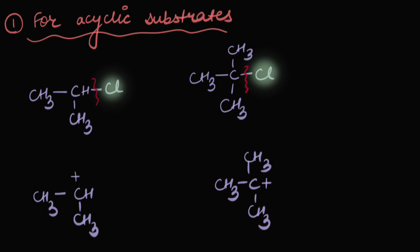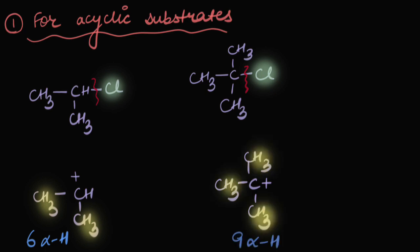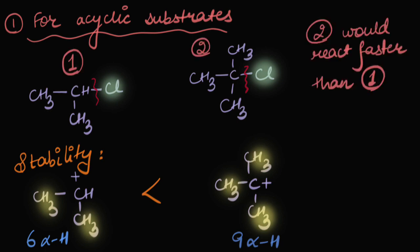Let's compare the stability of these carbocations. In the first case I can see there are six alpha hydrogens, while in the second case there are nine alpha hydrogens. More the number of alpha hydrogens, more is the hyperconjugation, and more is the stability. So the second carbocation is more stable than the first one, and therefore the second substrate would react faster than the first one.